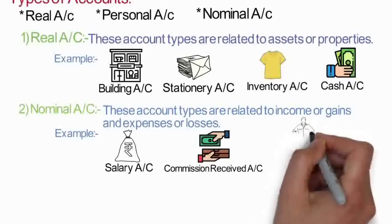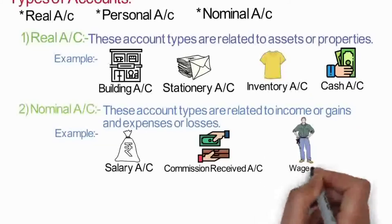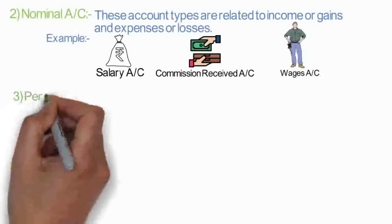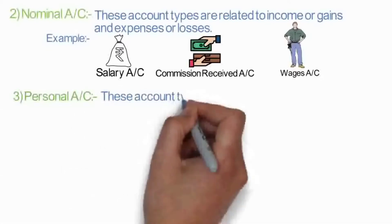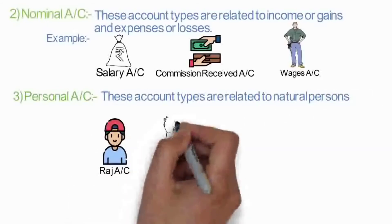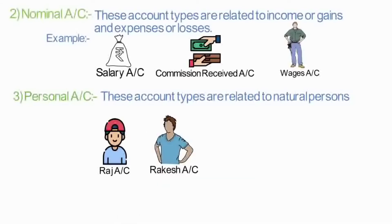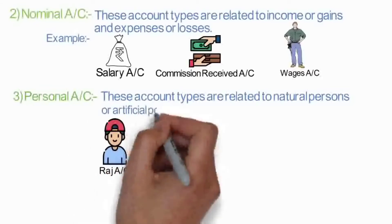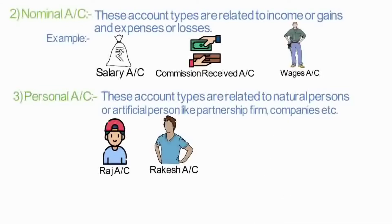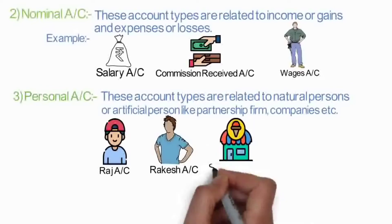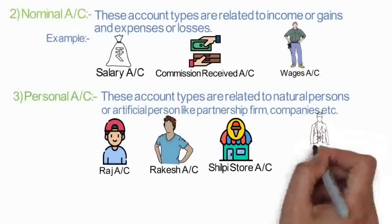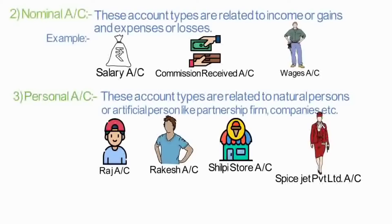Wages — we often pay wages, so that is an expense for us, making it a nominal account. What are personal accounts? These account types are related to natural persons like Raj account or Rakesh account. They can also be artificial persons like partnership firms, companies, association of persons, etc. For example, Chilpi Ice Cream Shop is a personal account as it is a partnership firm, or SpiceJet Private Limited is a company, so it is a personal account.